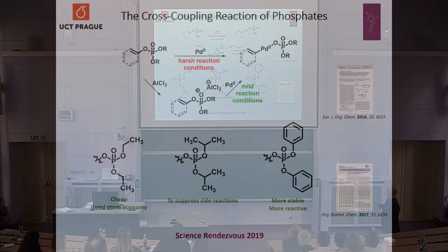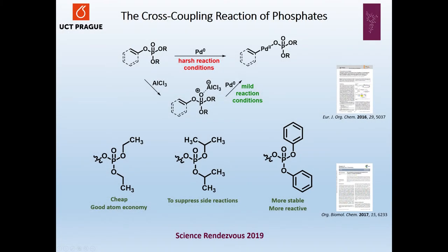We also learned that different phosphates can be used for different purposes. We normally use ethyl phosphate, which is cheap and has good atomic economy. But we can use isopropyl phosphate to suppress certain side reactions if they occur, and we also use diphenyl phosphate, which is stable and more reactive.